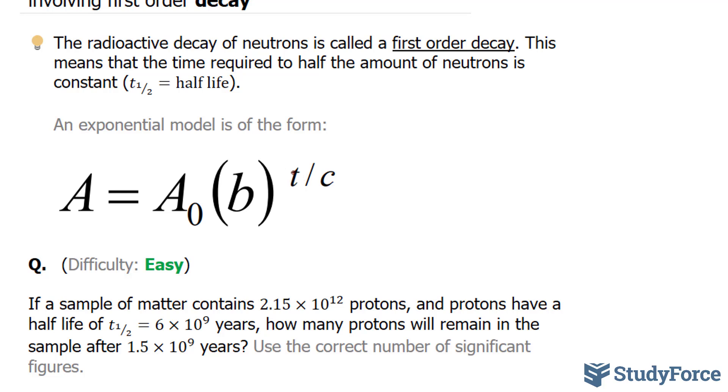Our T value here represents the time it takes. In our case, according to this question, we will replace T with 1.5 times 10 to the power of 9. And our C value represents the half-life provided in the question as 6 times 10 to the power of 9.